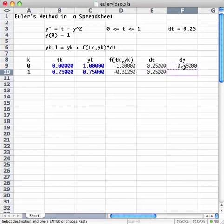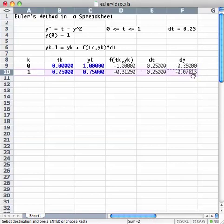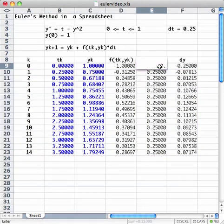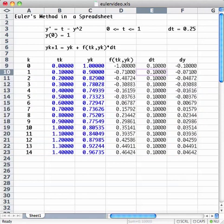I'll take the formula for dy and copy it to the next level. And I can have as many values as I want just by filling the formula down. And I can change the dt. And automatically the tk, yk will change with it.